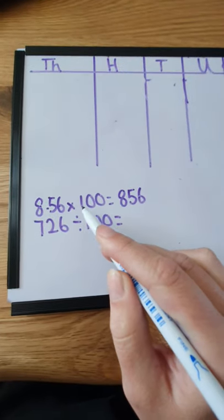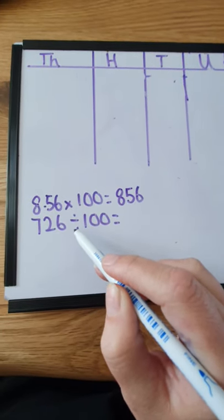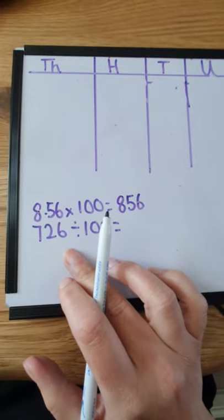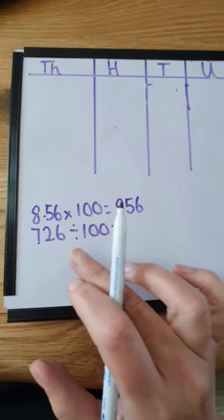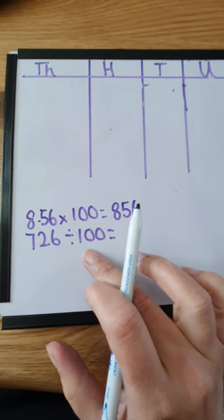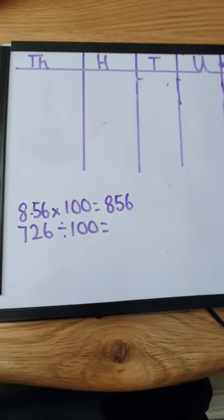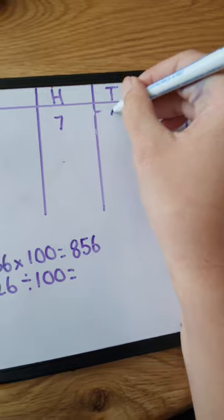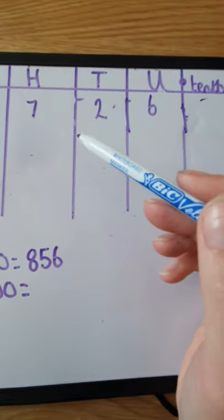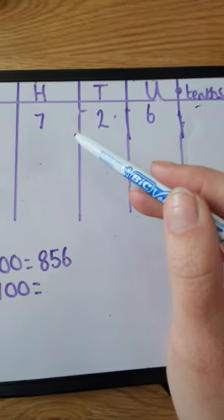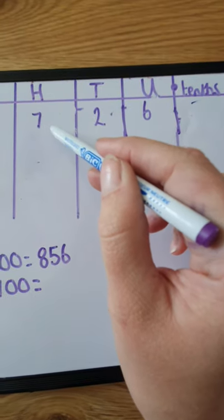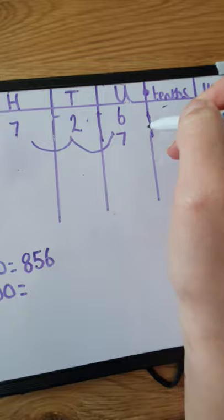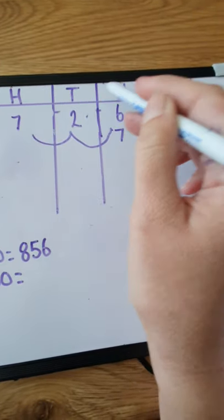Now let's think about dividing by 100. If we times and it goes up in value by 2 places, when we divide we're making the number smaller — we're sharing it out. So when we divide, it goes down in value by 2 places in our place value chart. Let's have 726 divided by 100. We'll place the original number in our place value chart, and each number is going to go down in value by 2. Our 700 is going to go down 2 places — our 7 hundreds will go to 7 units.